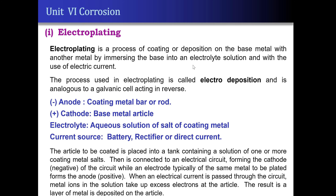Electroplating is a process of depositing one kind of metal on another metal, that is the base metal, using electric current. Therefore, it is also referred to as electro deposition. In this method, the base to be coated is immersed in the electrolyte solution in a tank so that deposition takes place. The coating metal is made as anode and the base metal article to be coated is made as cathode. The electrolyte solution is normally the salt solution of the same coating metal.